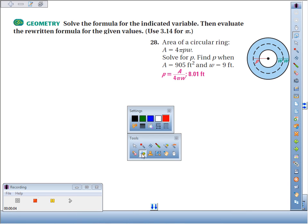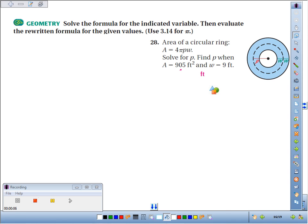Number 28: We're supposed to solve the formula for the indicated variable and then evaluate the rewritten formula for the given values. We're going to use 3.14 for π. The area of a circular ring, this blue ring, is A = 4πPW.